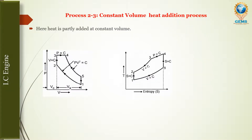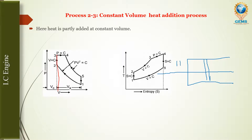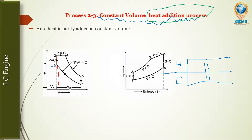Now we are going to supply heat — that is the addition of heat at constant volume. Process 2 to 3 is a constant volume heat addition process. The volume remains constant while we add heat. As a result, the temperature and pressure will increase.